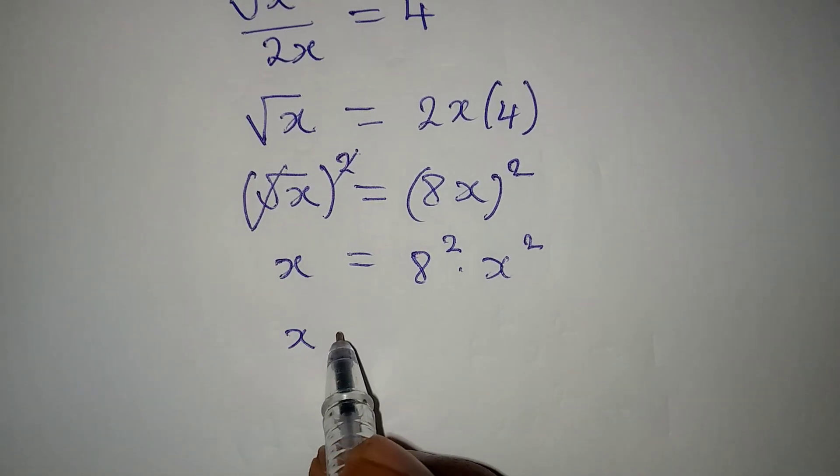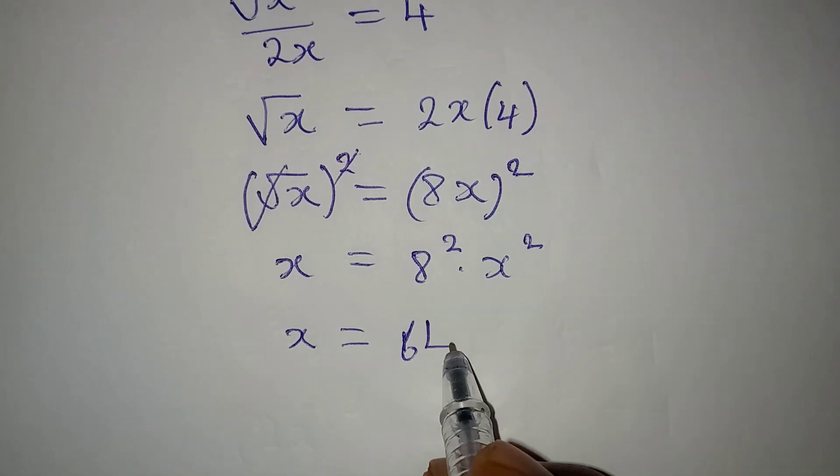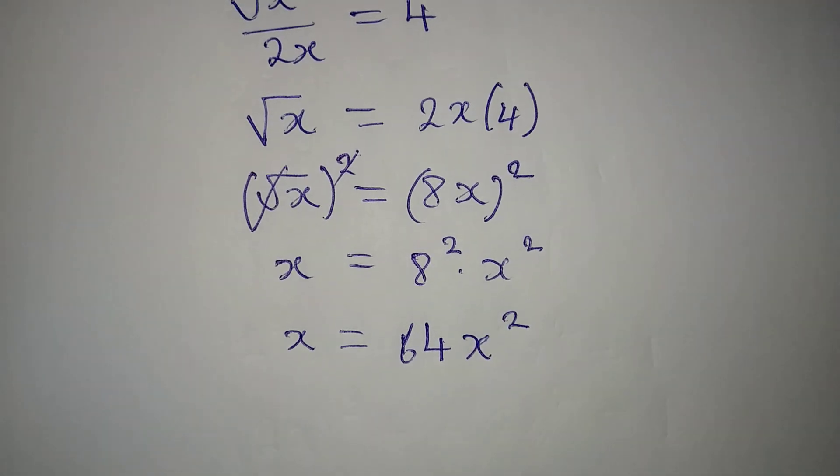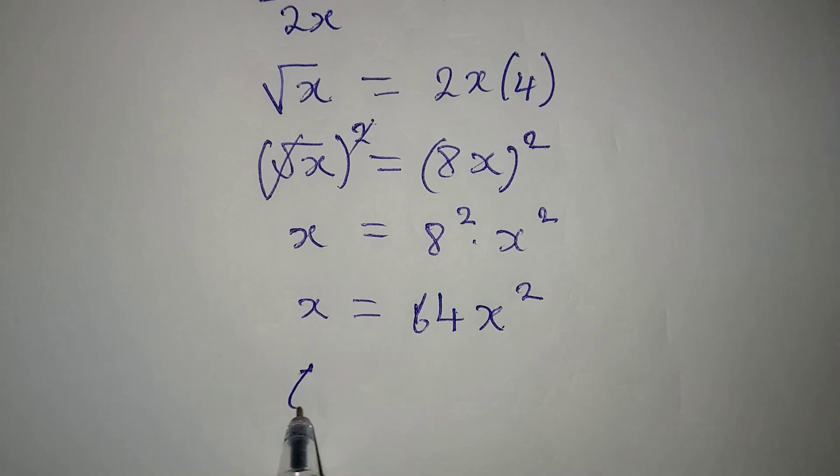So x is 64, 64x to the power of 2. Now turn this around so you have 64x squared to be equal to x.